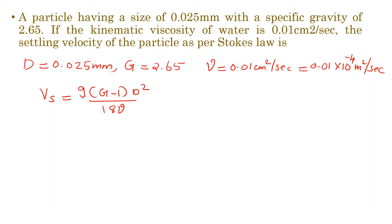In the formula we have all the values. G value is 9.81. Specifically, we have specific gravity minus 1, which gives us 2.65 - 1.